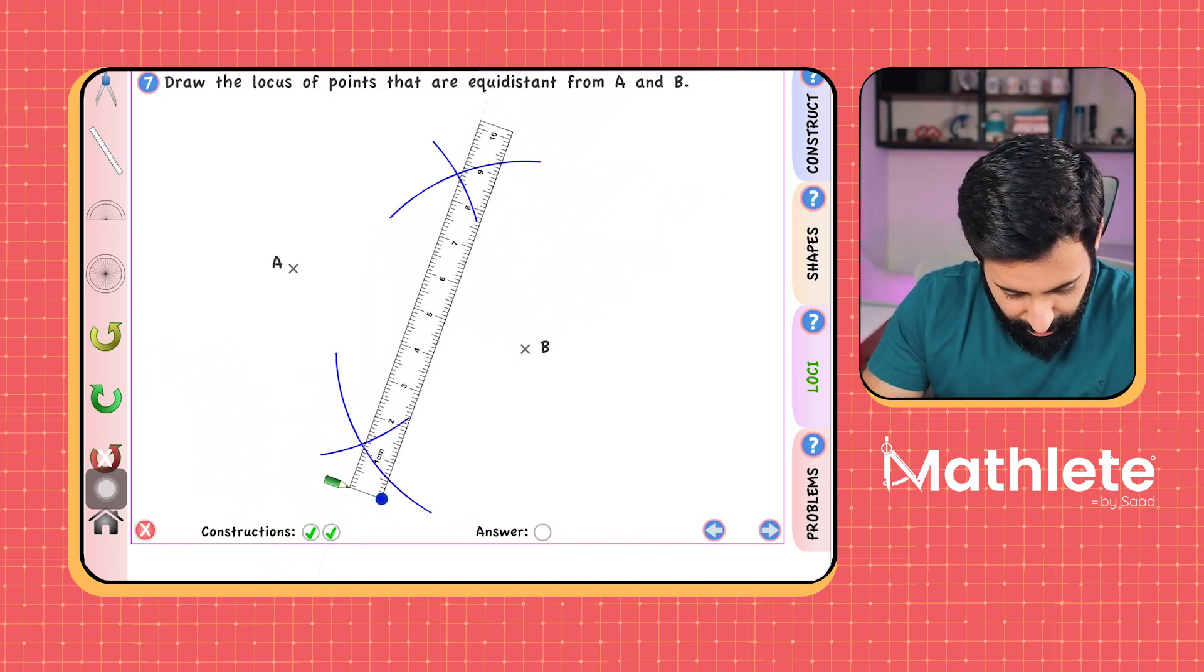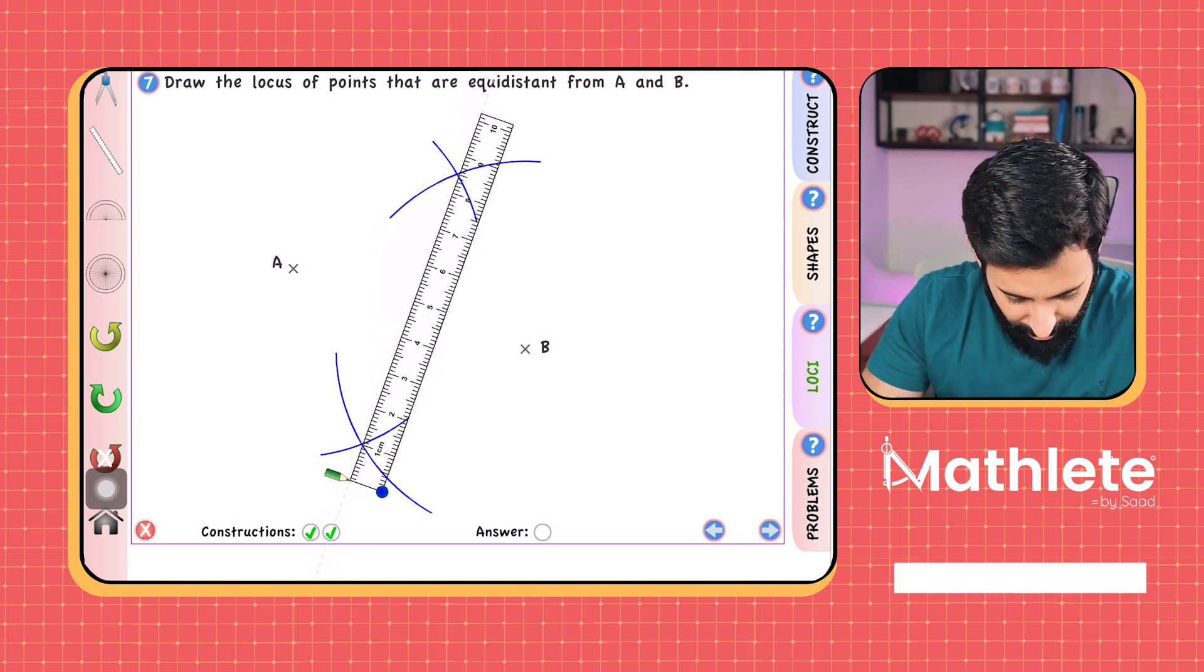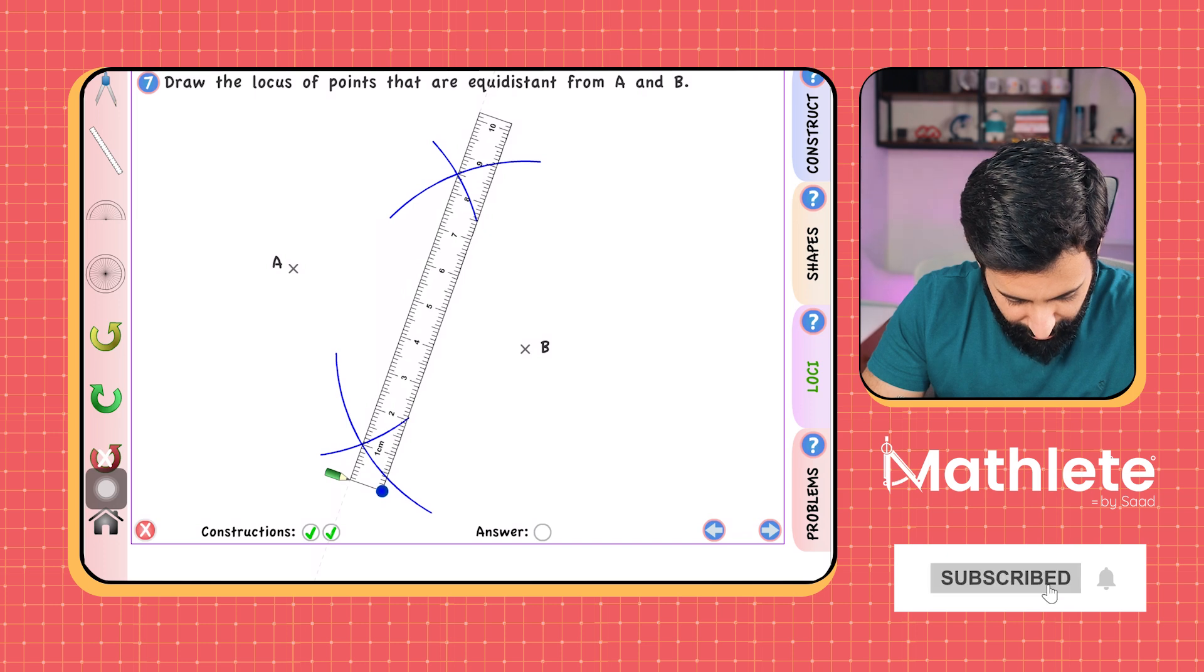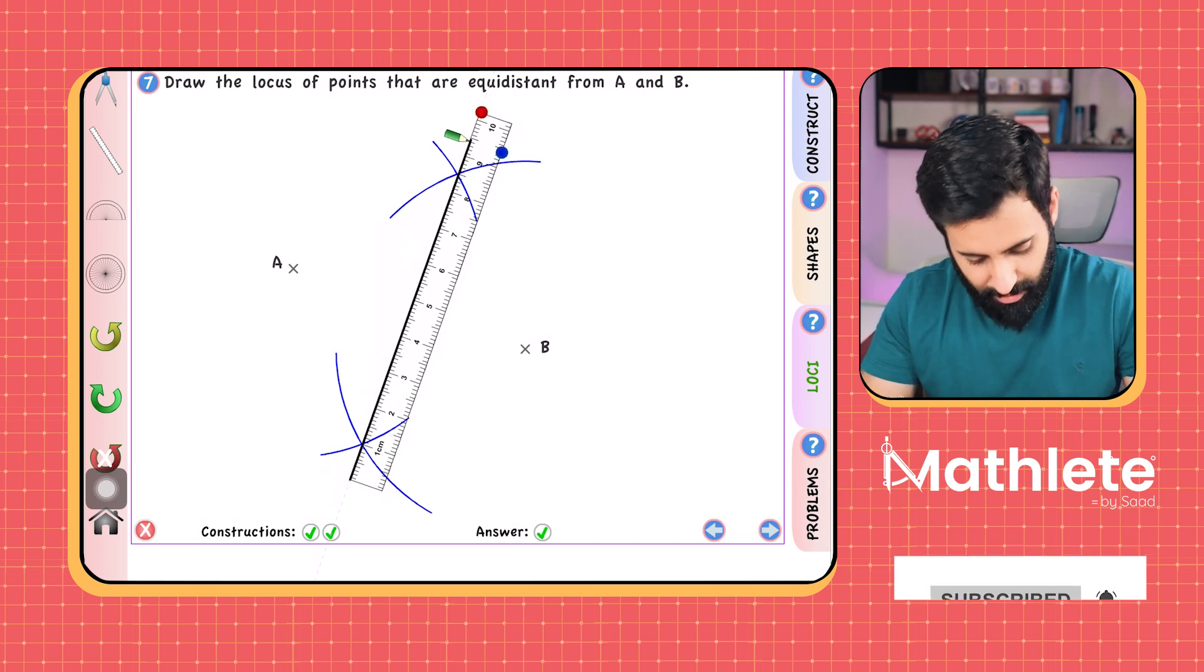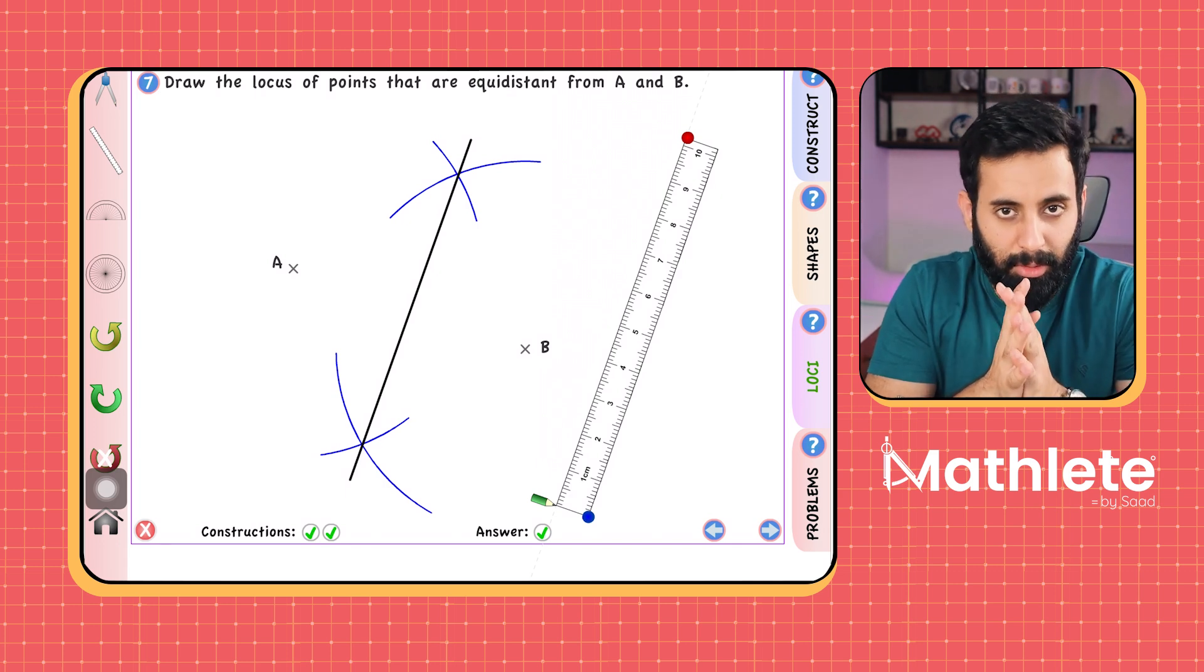Now the two points of intersection, you will join them and make a straight line. So when you join the points where the arcs intersect, you will get a straight line and that straight line will be your perpendicular bisector. So if I join this line, there you go. This is basically what the perpendicular bisector of A and B looks like.